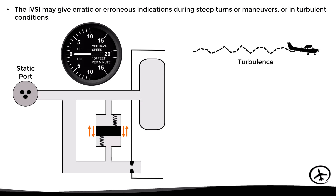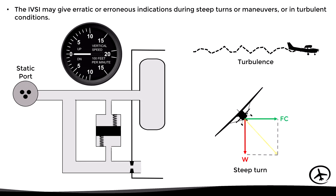When executing a steep turn, the piston will be held down by the load factor, causing the instrument to artificially indicate a climb. That is why in most modern aircraft the vertical speed indication is augmented by the inertial reference systems, which counteract this error.